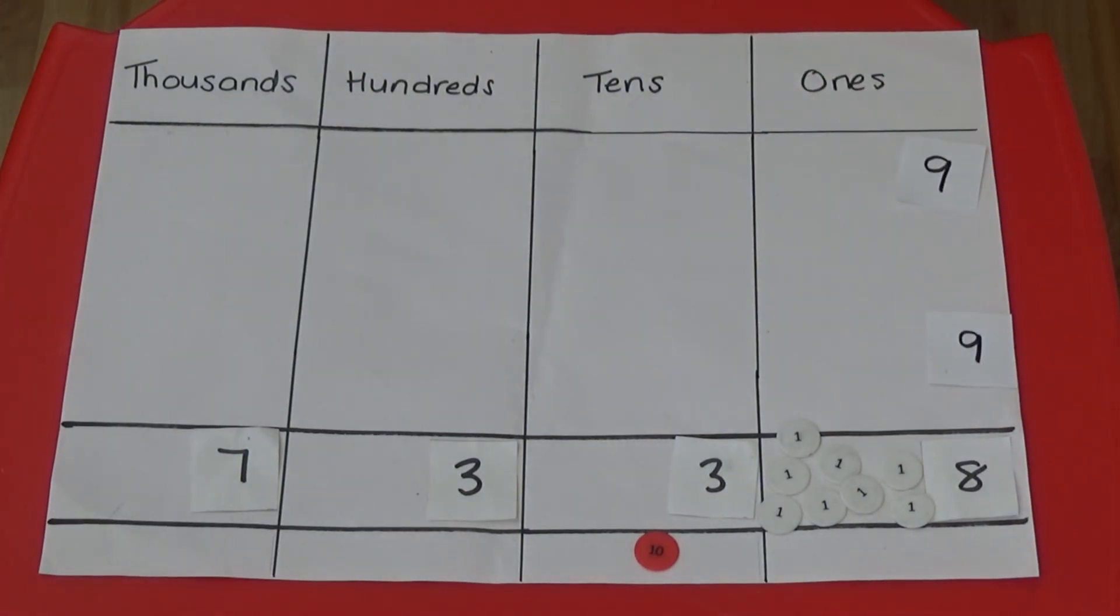I now need to look at the 10s column. We need to find a combination which will give us 3 in the answer box. We need to remember we have 1 10 under the answer box already.